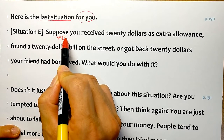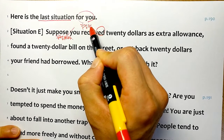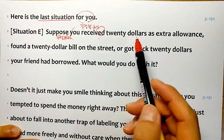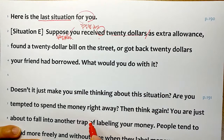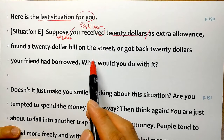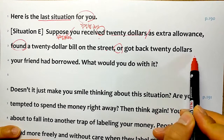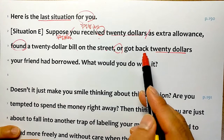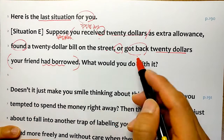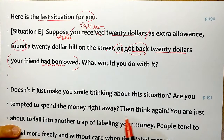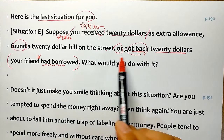suppose - 가정해보세요, 가정하다라는 뜻이죠. 가정하는데 과거형이 나온 것은 가정법입니다. 가정법 과거, 현재 사실을 가정하는 거예요. 당신이 지금 $20를 extra allowance, 용돈으로 받았다고 가정해보세요. 또 found a $20 bill on the street, 길거리에서 주웠다고 가정해봐라. 혹은 got back $20 - get back하면 되돌려받았다는 뜻이죠. your friend had borrowed - had+pp를 쓴 이유는 돌려받은 것보다 앞서니까 had+pp를 쓴 거예요. 네 친구가 빌렸던 돈을 네가 되돌려받았다고 가정해보라는 거죠. 어쨌든 이 세 가지 중에 전부 다 좋은 거죠.